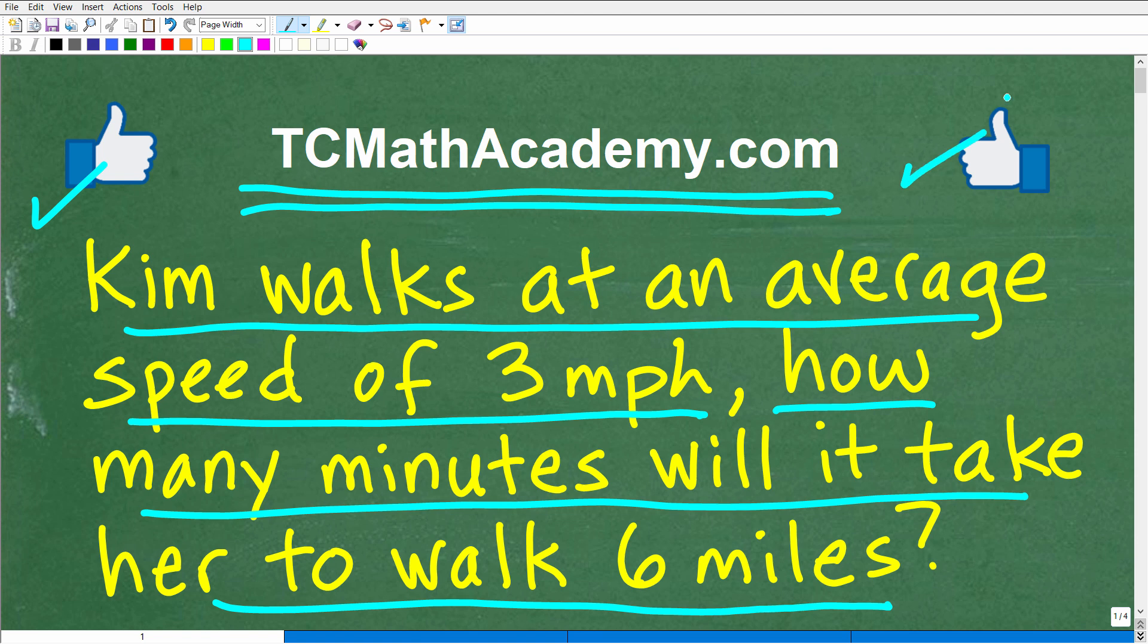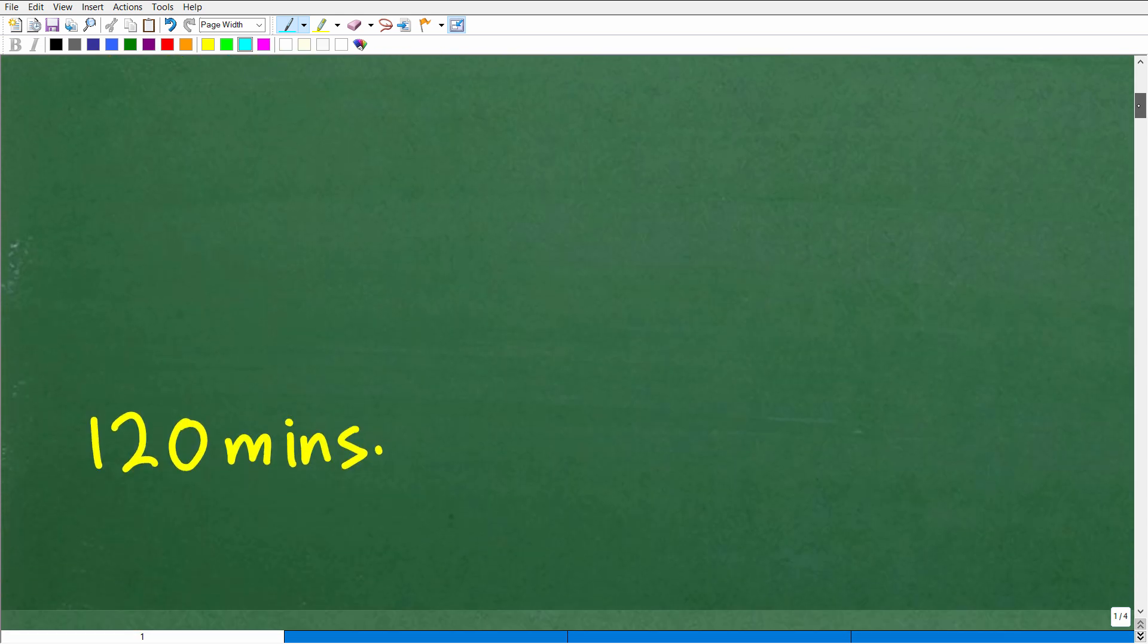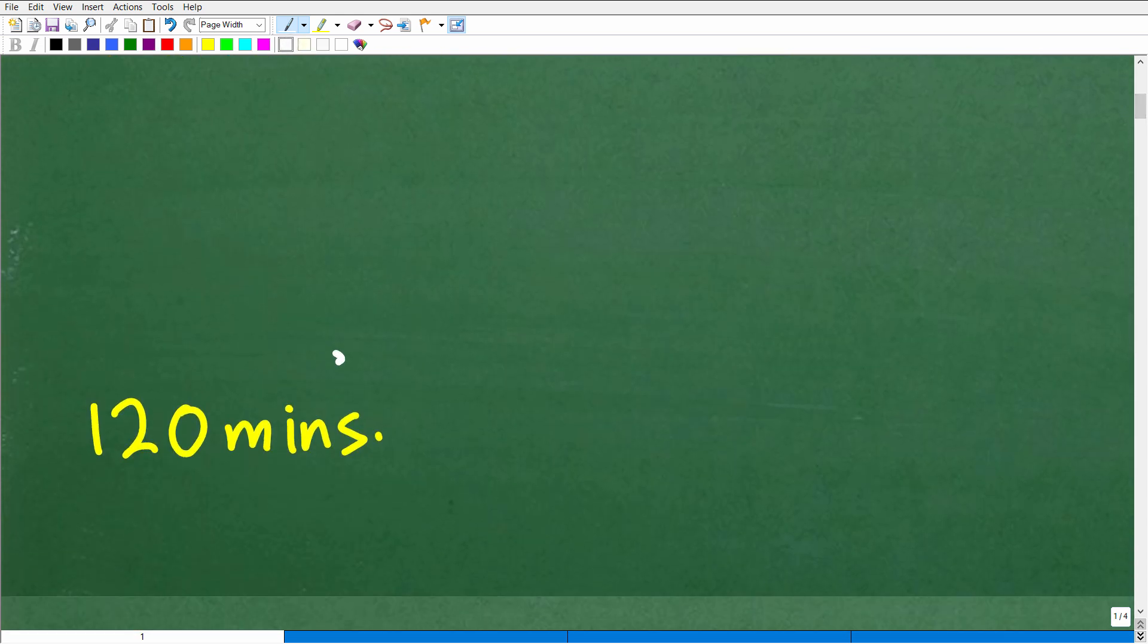One more time for the problem. We have Kim, she walks at an average speed of 3 miles per hour. How many minutes will it take her to walk 6 miles? So we're looking for how many minutes will it take her to walk this distance at this particular speed. Let's take a look at the answer. The answer is 120 minutes.